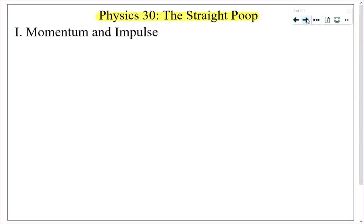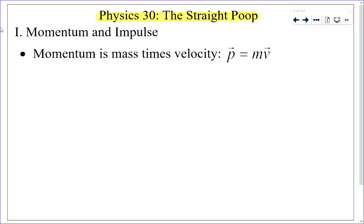This first video will go through Unit 1 and Unit 2. Unit 1 deals with momentum and impulse. We started off the course by learning that momentum is defined as the product of mass and velocity. It's a very simple formula, except you need to remember that since velocity is a vector, momentum is also a vector.